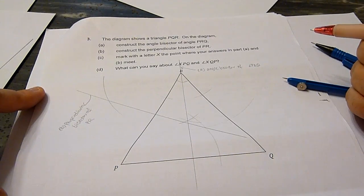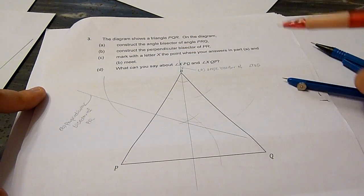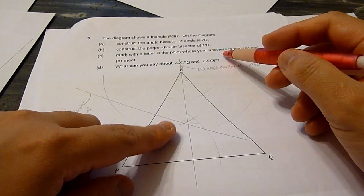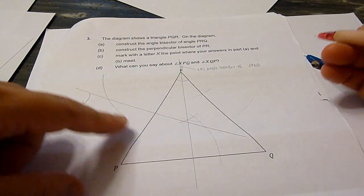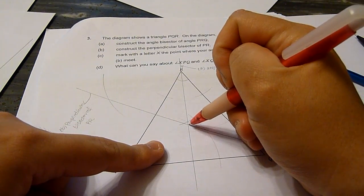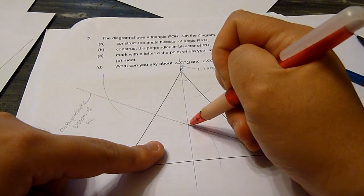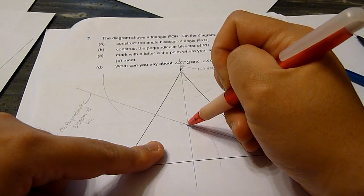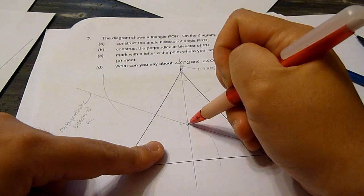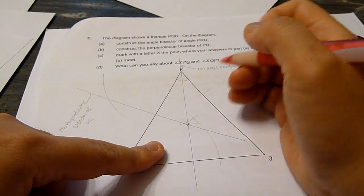Now it says mark the letter X, the point where the answers in A and B meet. So this is the point where the two bisectors meet, and this will be X.